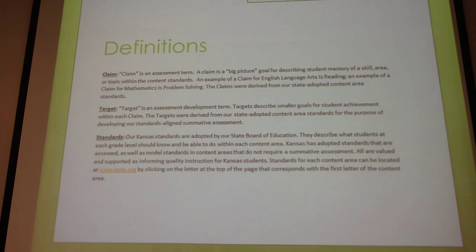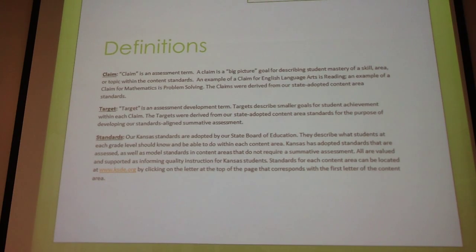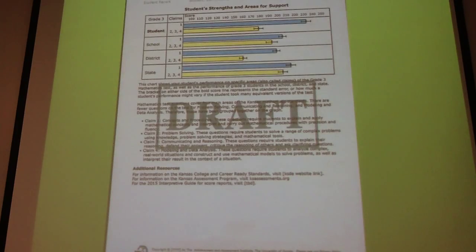In English language arts we have the standards for reading informational text, reading literary text, and the foundational standards, including kindergarten through fifth grade. As a claim, we want students to claim a certain skill — it's the overarching concept.